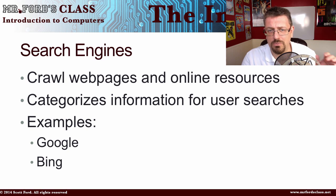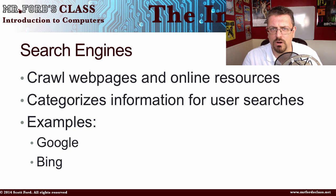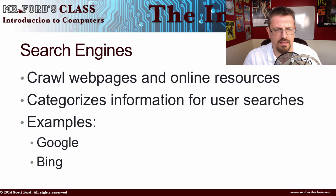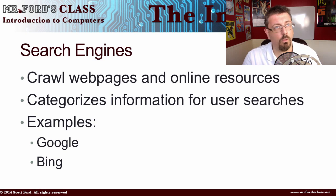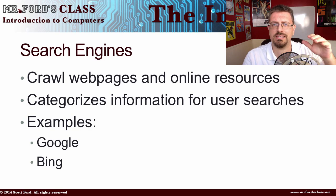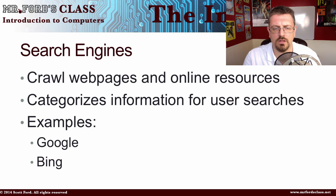With real-time search now, you can type in words and the search results start showing up before you even hit enter. Search engines categorize information for user search, and the power of Google and Bing is immense. If you're just using Google or Bing at a basic level, you're missing out on a good portion of their power. The two big search engines are Google and Bing — all the other search engines you might run into get their information primarily from these two. Google is Google, and Bing is a Microsoft product.